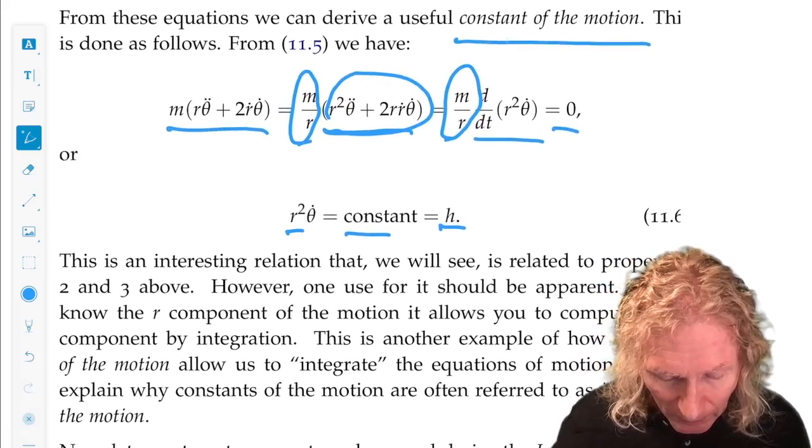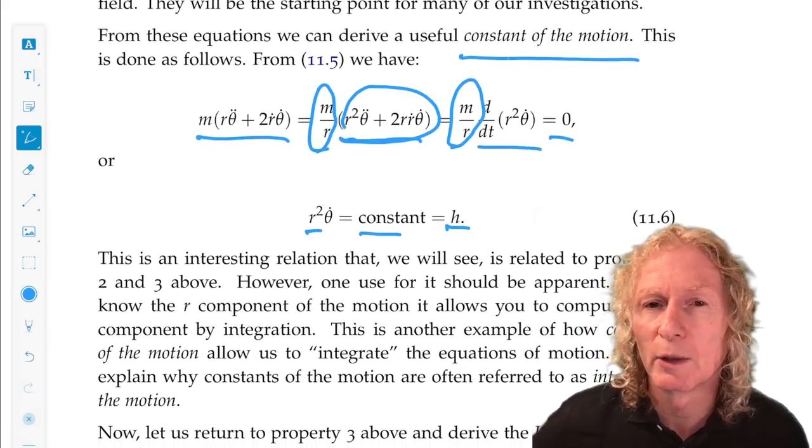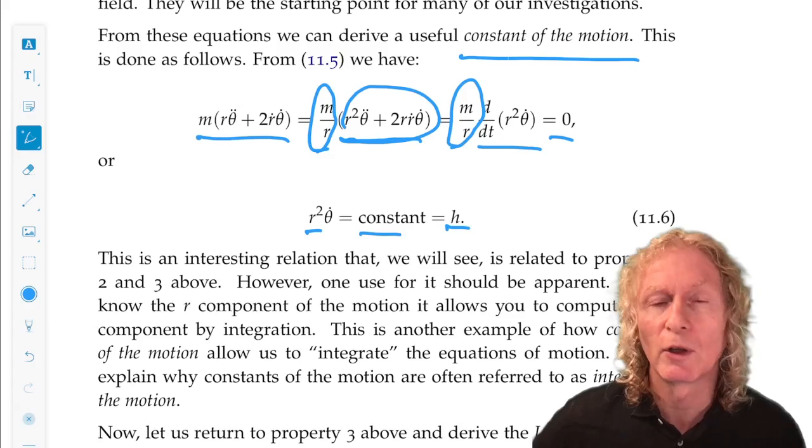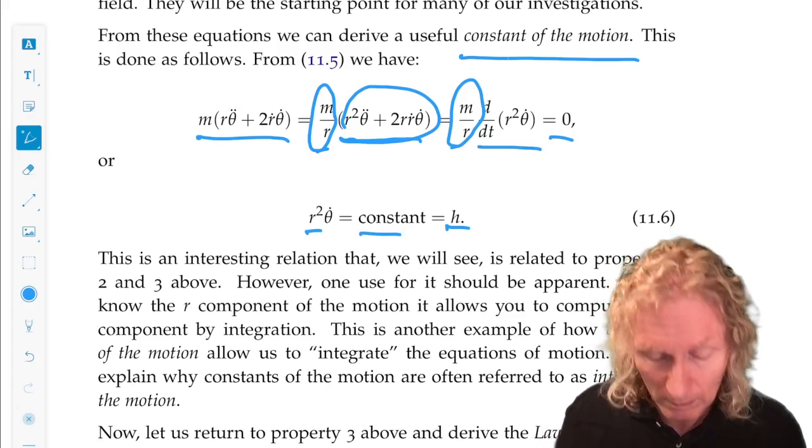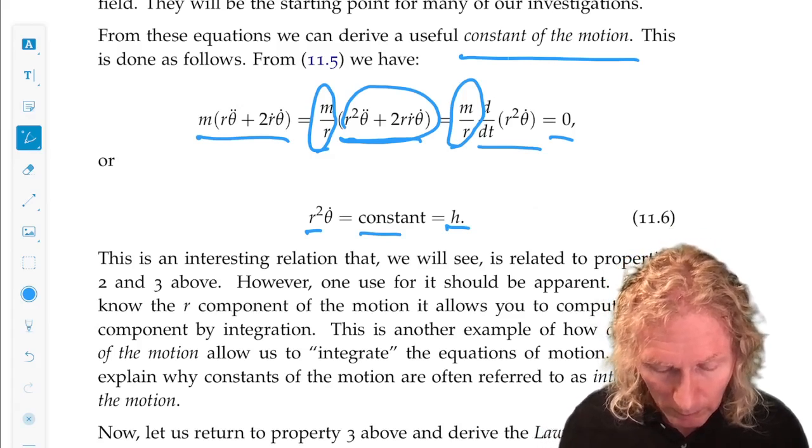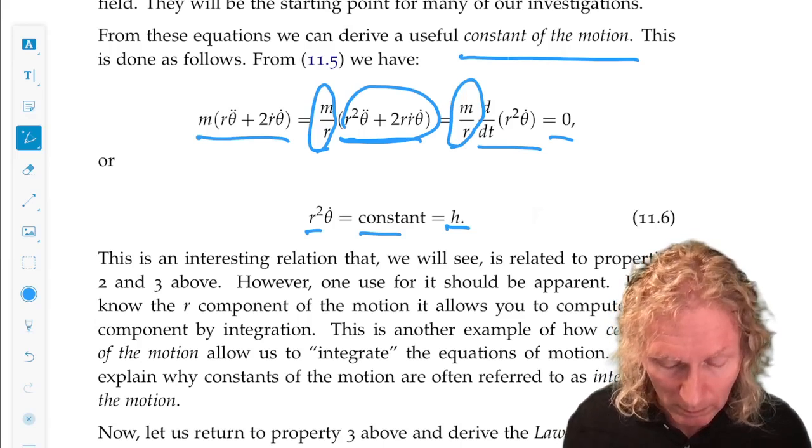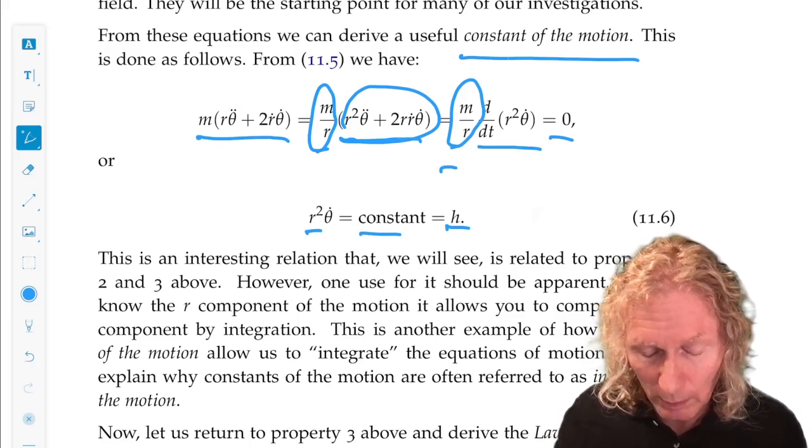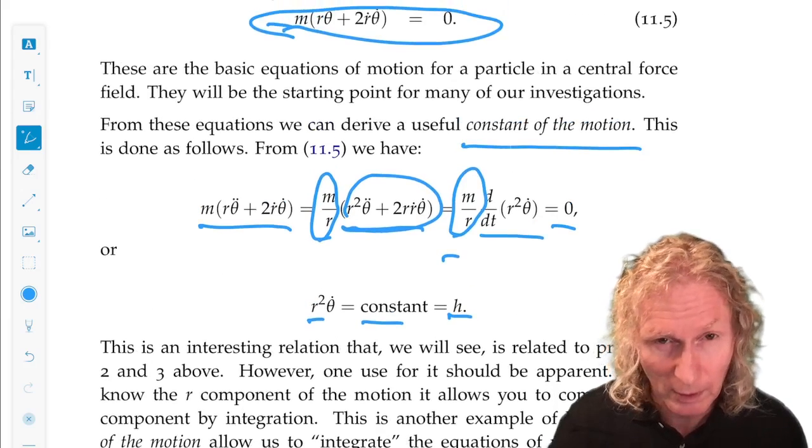And this is starting to look a lot like an angular momentum. Remember, angular momentum about the origin for this particle of constant mass m is r cross p. So this is r times r θ̇. And if m were multiplying it, which we've taken that out up here, we would have that. And it's just a constant.